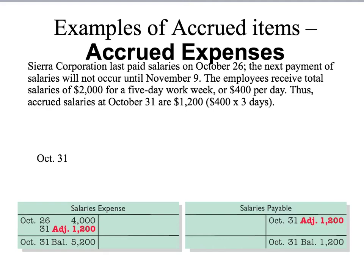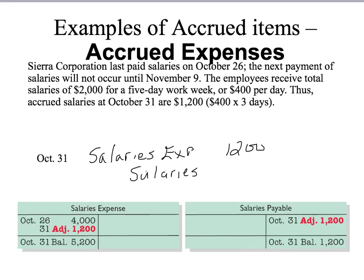So I simply record it. Again, debit the expense — salaries expense — increasing expenses by $1,200 for the month. And I owe the money, so I call that salaries payable, and I credit that liability for $1,200. That's how I record accrued expenses: recognize the expense, set up the payable.